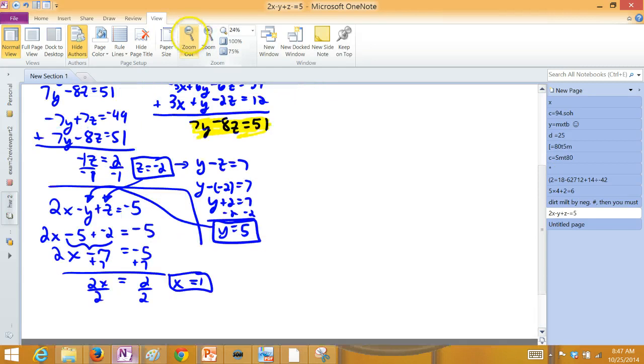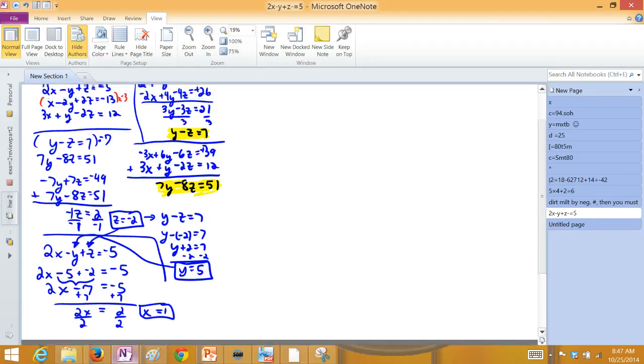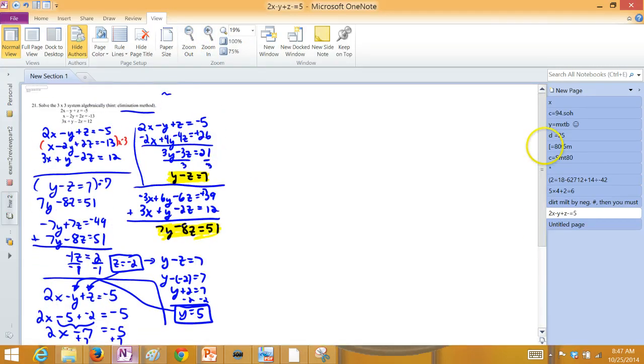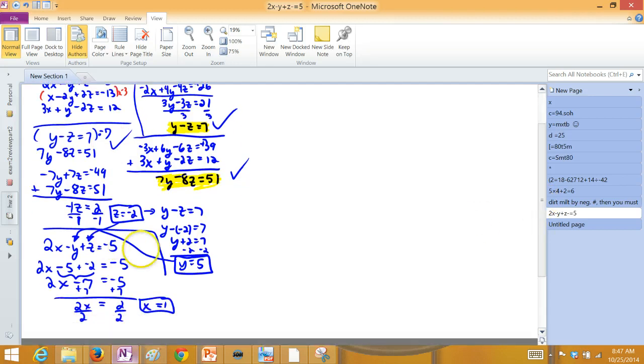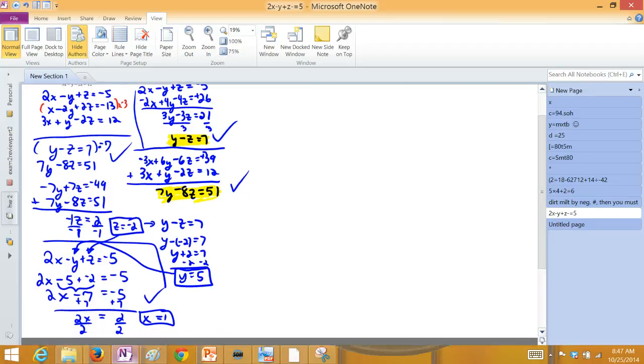So let me zoom out so we can see it all together. The process was eliminate one of the variables. Then pair up another two equations and eliminate that same variable. Then you're down to two equations and two unknowns. Solve that. And then take that back into one of the original equations and find your missing third guy.